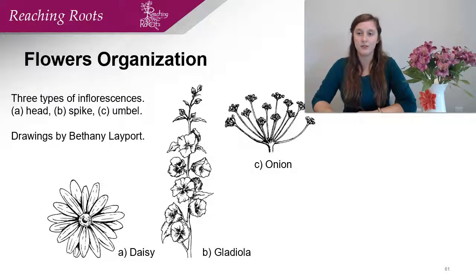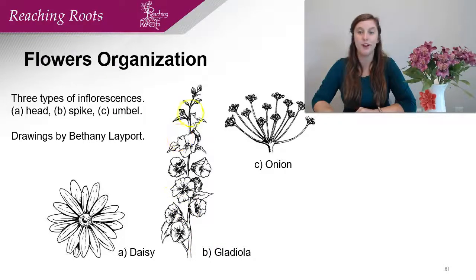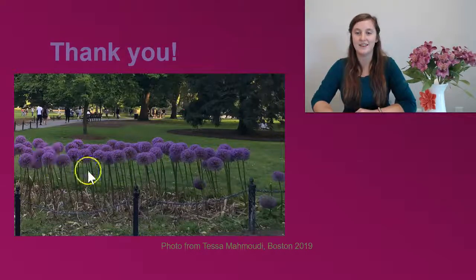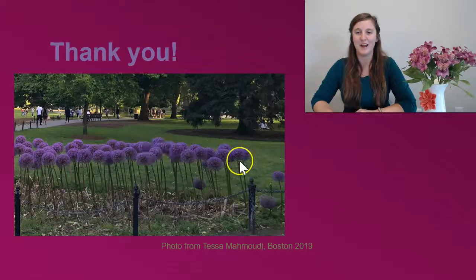There are some names for different flower organizations. One is a head, such as in a daisy. Another example, seen in gladiola, is a spike — one flower spike with many different florets. And in onion, these different florets are arranged in an umbell shape. Here is a pretty flower seen while traveling in Boston in the onion family — you can see these giant umbell-shaped florets arranged to make a beautiful flower.